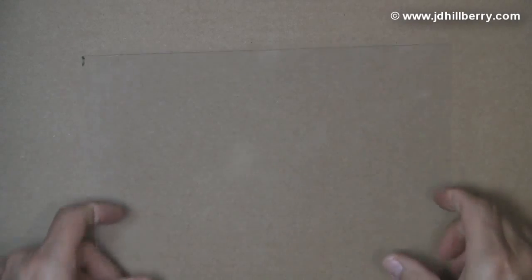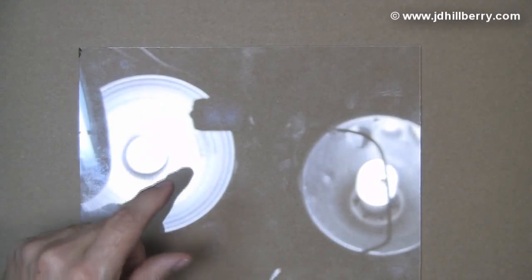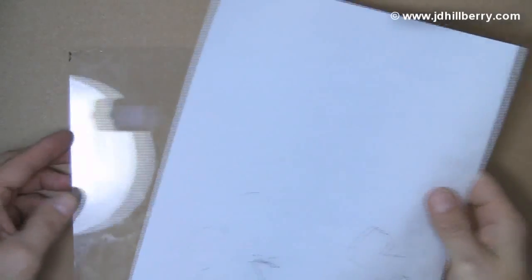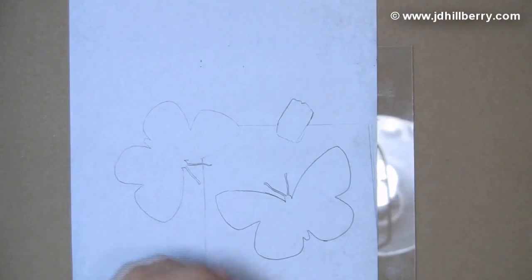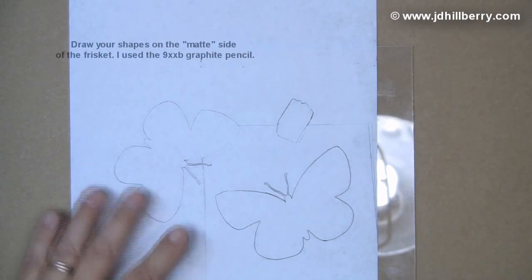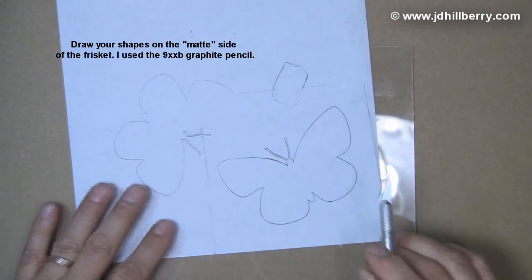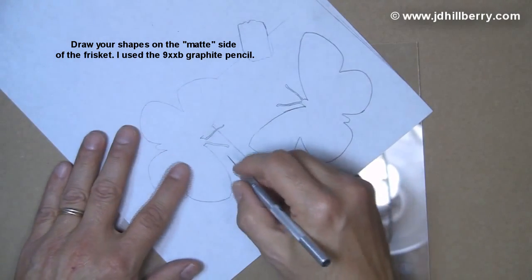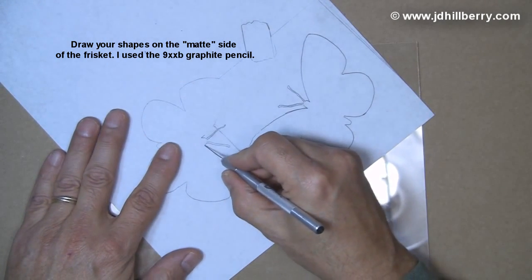I like to cut the frisket on a piece of glass. It just makes smoother, cleaner cuts. And I do this with an X-Acto knife. So on this piece of frisket here I have drawn the basic outlines of the shapes that I want to cut out. And I'm just going to follow these outlines with the X-Acto knife.